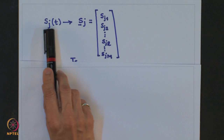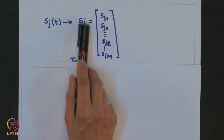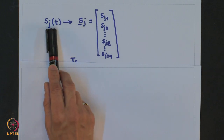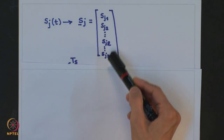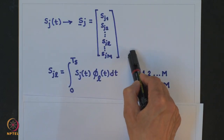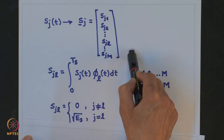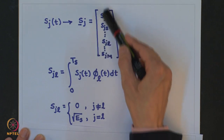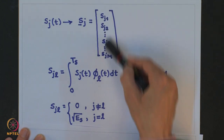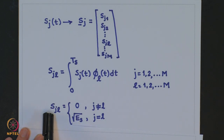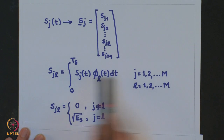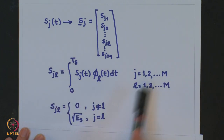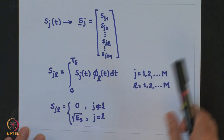We get M components for signal S_j(t), and we denote the message vector corresponding to S_j(t) as S_j with components S_{j1}, S_{j2}, up to S_{jm}. Importantly, we get only one nonzero component in this vector — the rest are zero. Specifically, S_{jl} = 0 for j ≠ l, and S_{jl} = √E_s for j = l, for all j from 1 to M and l from 1 to M.